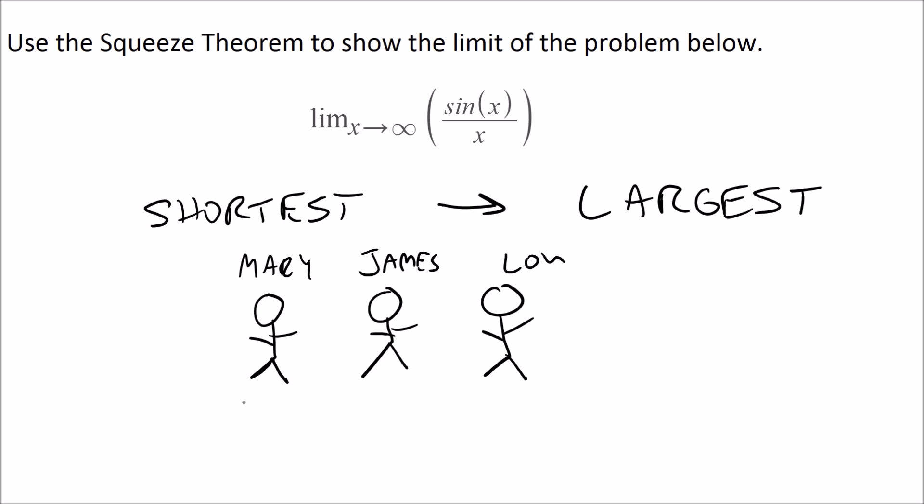And we find out that Mary in this case is five feet tall and we also know that Lou is five feet tall. Well by that, if we know they're lined up from shortest to largest here, we would know then James would have to also be five feet tall because he's in between Mary and Lou.